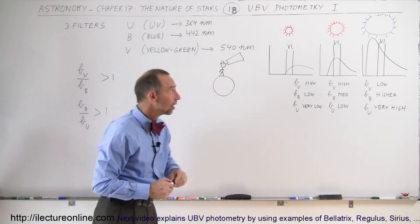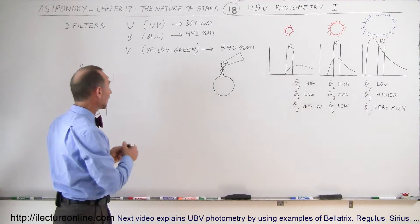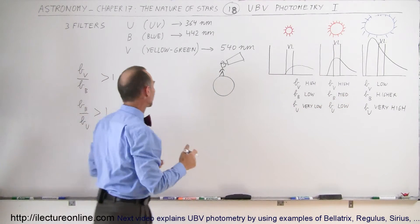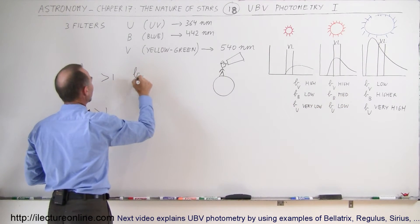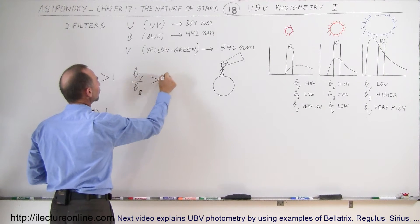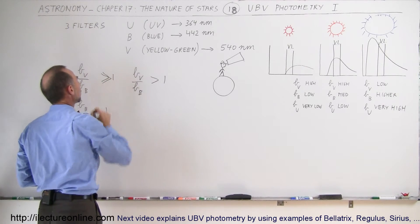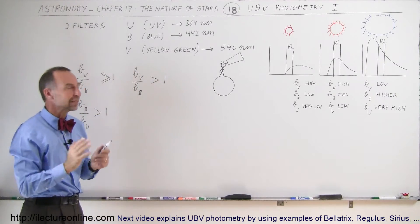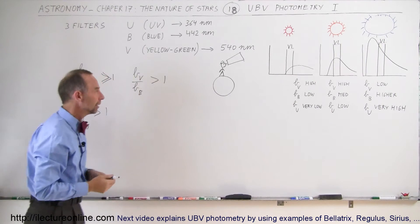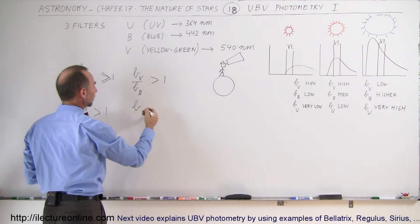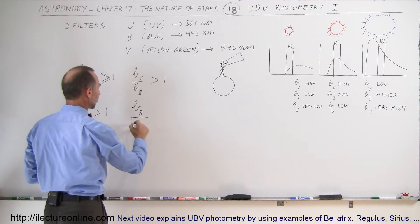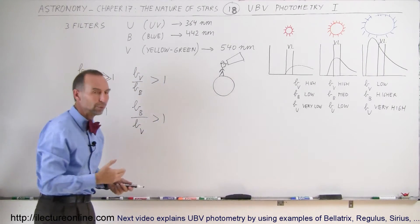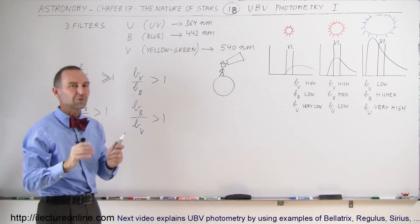Looking at a second star, we take the ratio of light coming through at the visible light spectrum versus the blue light spectrum — brightness at V divided by brightness at B. We find the ratio is greater than one, but not quite as great as the first star. So the first ratio is much greater than one while this one is only somewhat greater than one. That's how we can tell the difference between a blue star and one that's more orange or yellow in color. Measuring the blue filter output compared to the UV filter output, this ratio is also greater than one, confirming the star type.